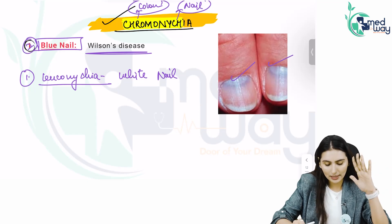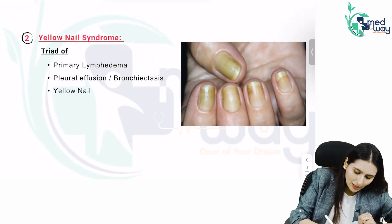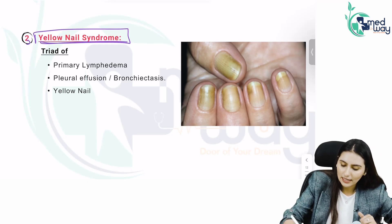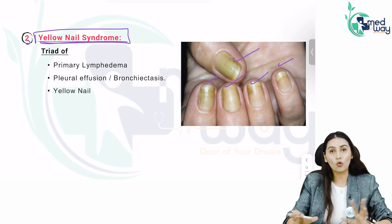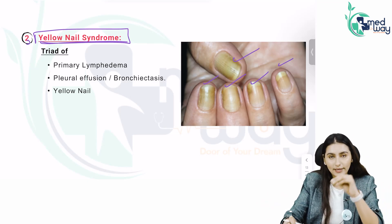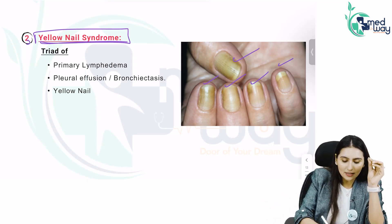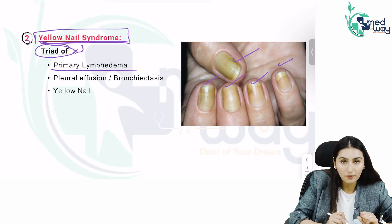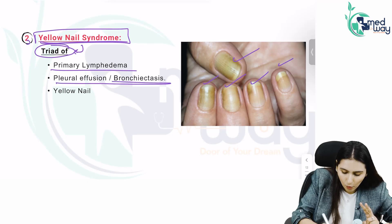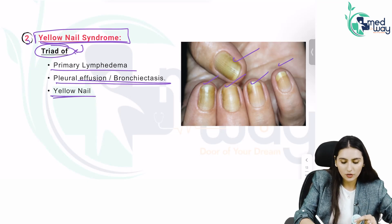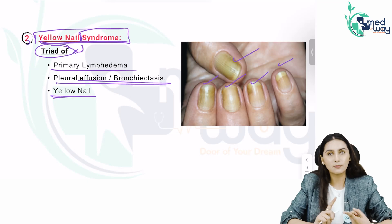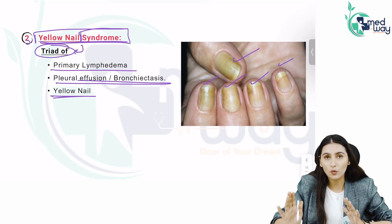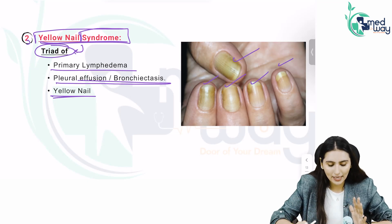So chromonychia includes leukonychia and blue nail. The third thing in chromonychia is yellow nail syndrome. The nails are completely yellow, but because it is a syndrome, it is not just an isolated finding — it has a triad of primary lymphedema, pleural effusion or bronchiectasis, along with yellow nails.